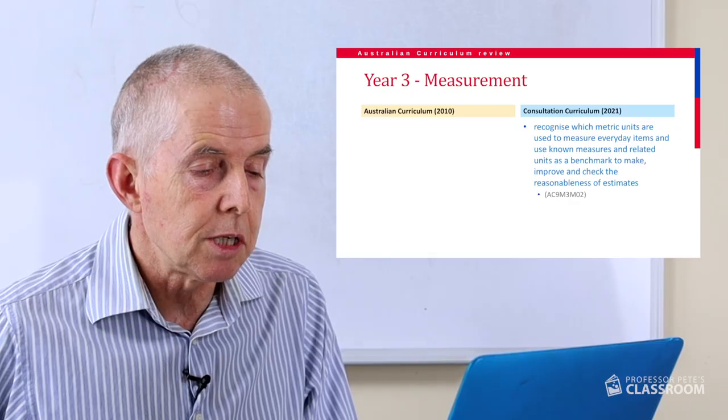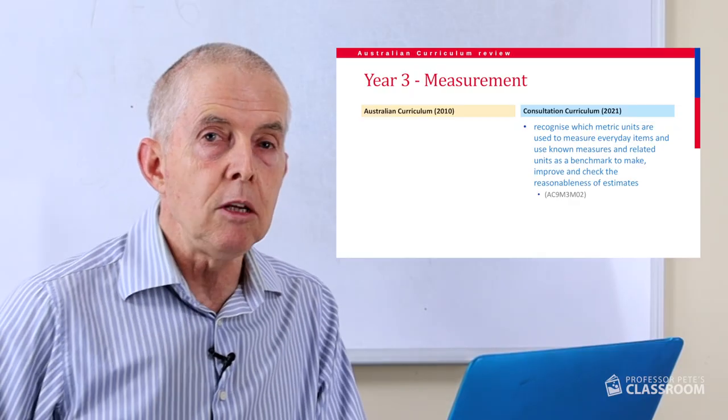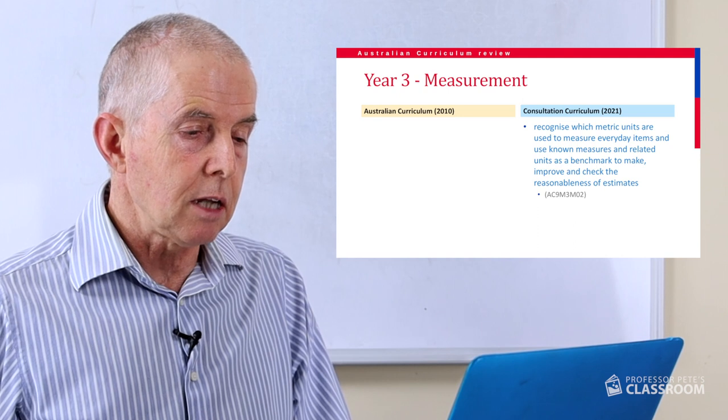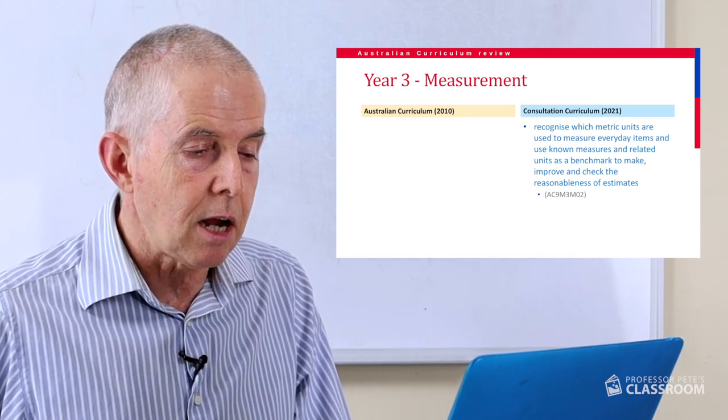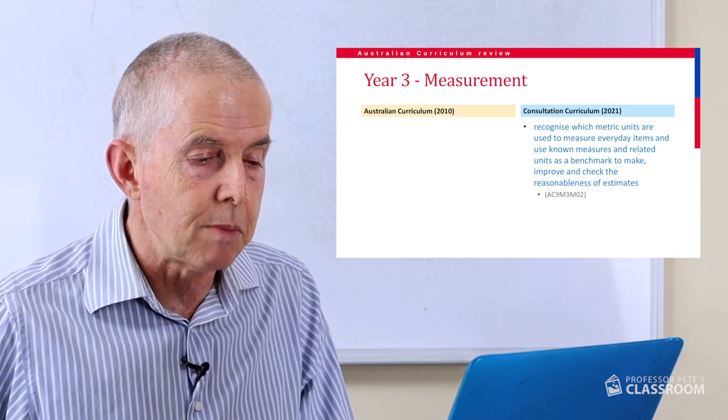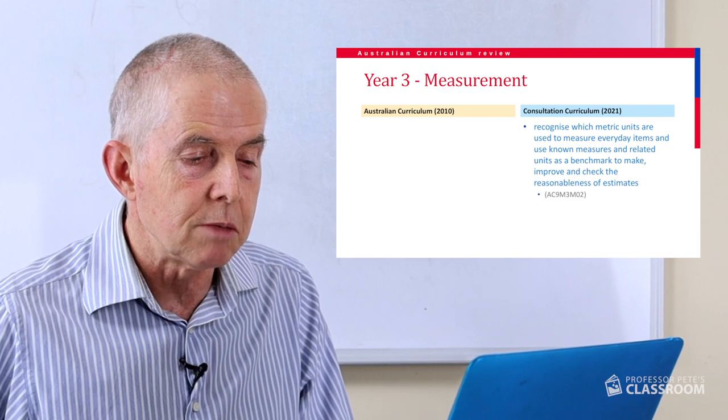The second measurement content descriptor is completely new — there's no old existing parallel. It says recognize which metric units are used to measure everyday items and use known measures and related units as a benchmark to make, improve and check the reasonableness of estimates. So we're exploring metric units, which ones are used for everyday items, use known measures as a benchmark, and we can make, improve and check the reasonableness of estimates. Lots of nice verbs there — I love it.